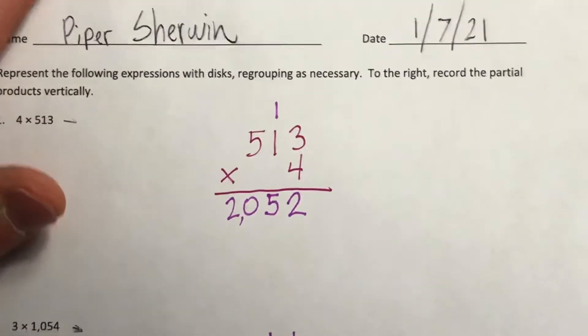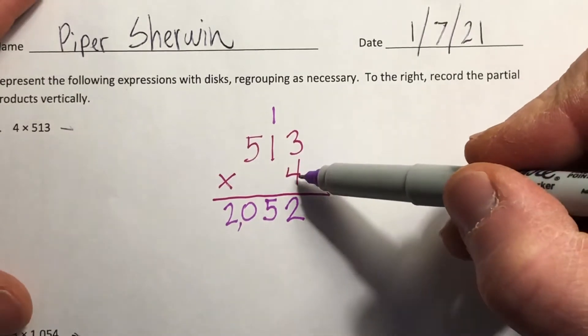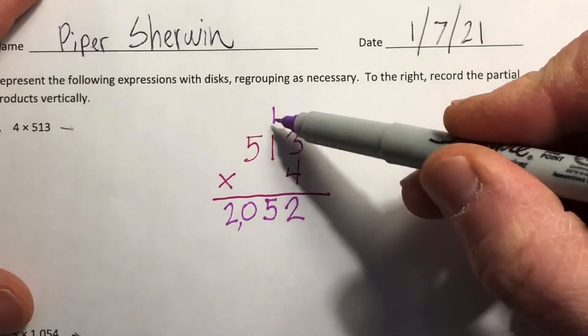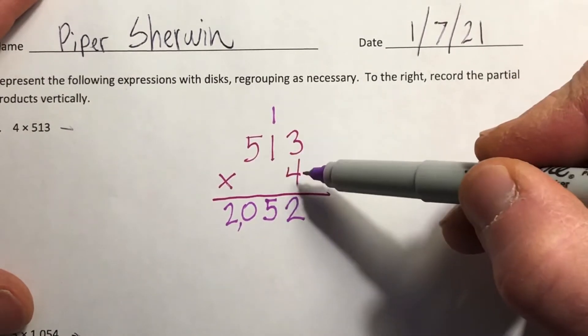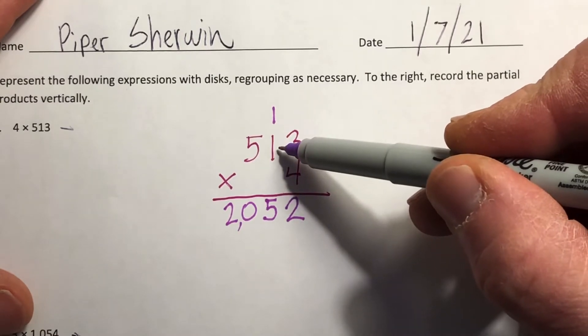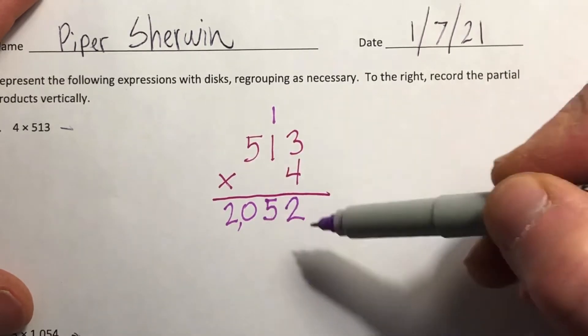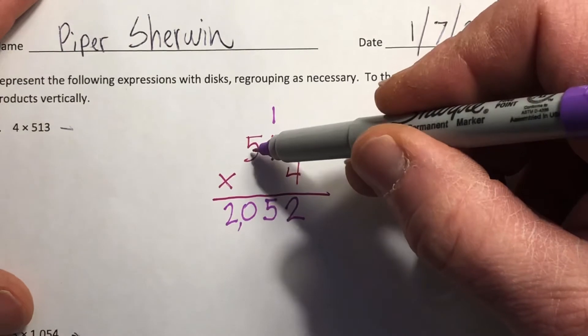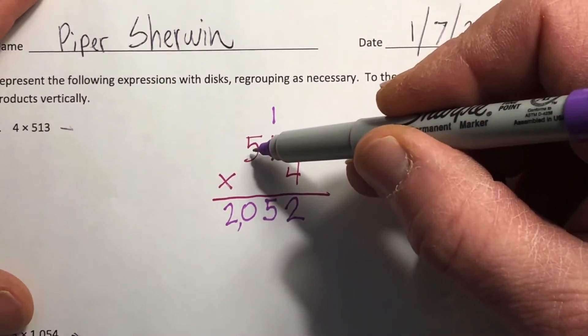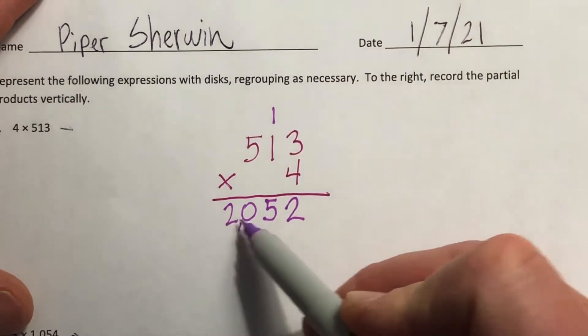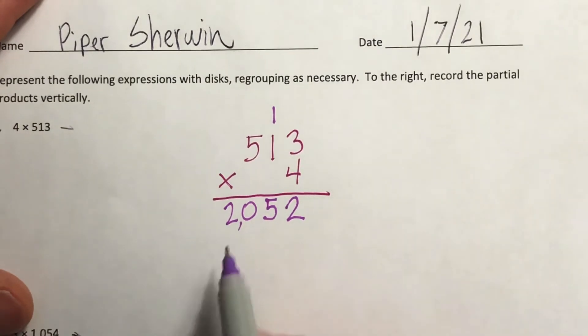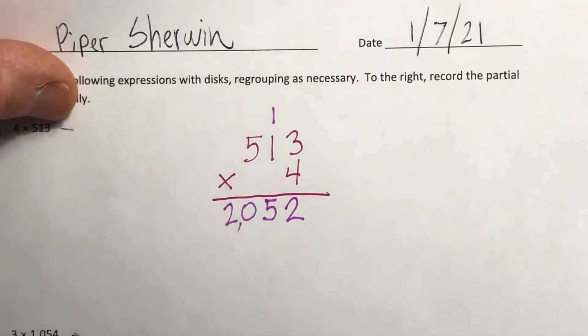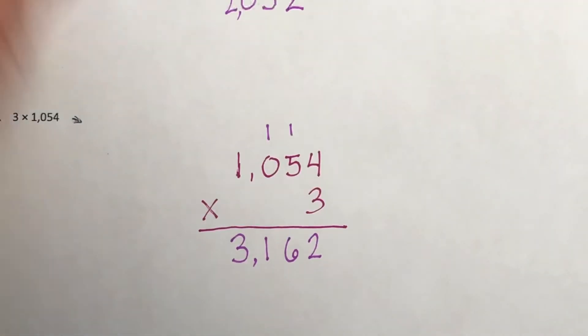We went right through. 4 times 3 is 12, put down the 2, carry the 1 into the tens place. 4 times 1 is 4 plus 1 is 5, that's 5 tens. And then 4 times 5, and that 5 is in the hundreds place, comes to 20. So I put down my 20 right here, put my comma. It's 2,052.